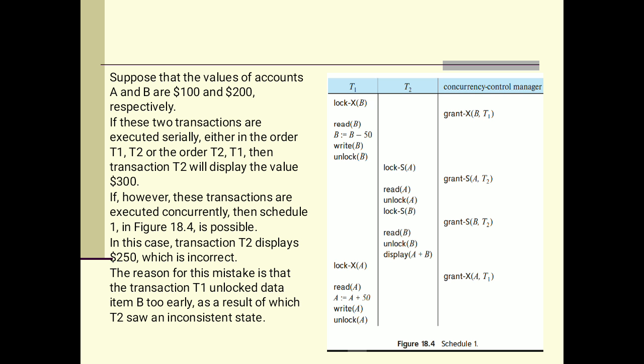Read A means we read the value as 100. Then display A plus B. What value of A plus B will be displayed? B is 150 and A is 100, so 100 plus 150 is 250. Then T1 again starts executing. Lock X(A), read A, A is equal to A plus 50. But what is the value of A? Value of A is 100, and 100 plus 50 is equal to 150, then write A. A value will be 150, but it is wrong value.